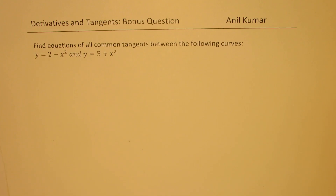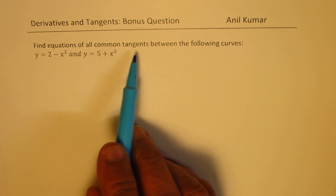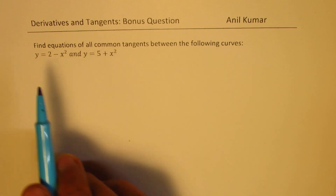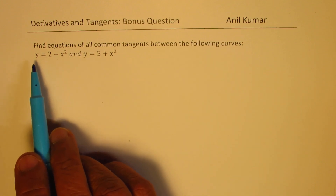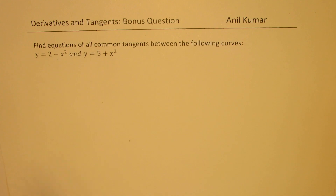I am Anil Kumar. Let me thank my student Shruti for sharing this beautiful question and I hope its solution will help many others. This is a bonus question based on derivatives and tangents. Find equations of common tangents between the following curves: y equals 2 minus x squared, and y equals 5 plus x squared.